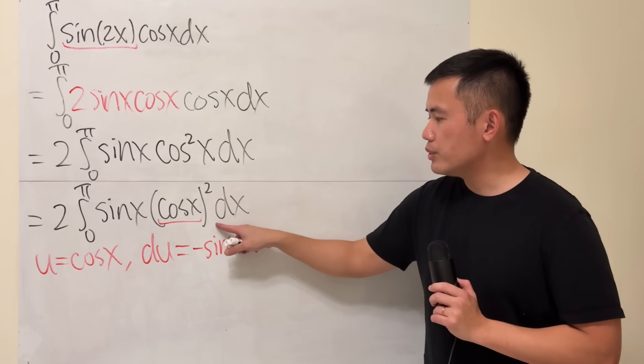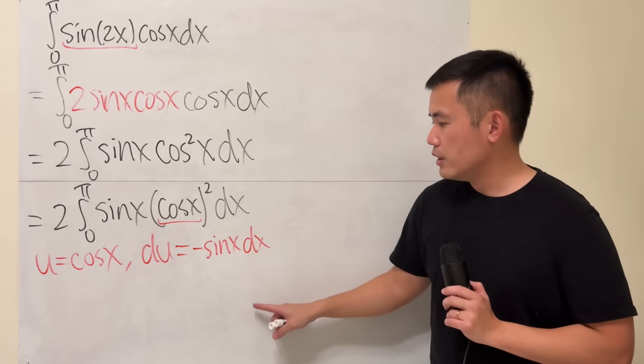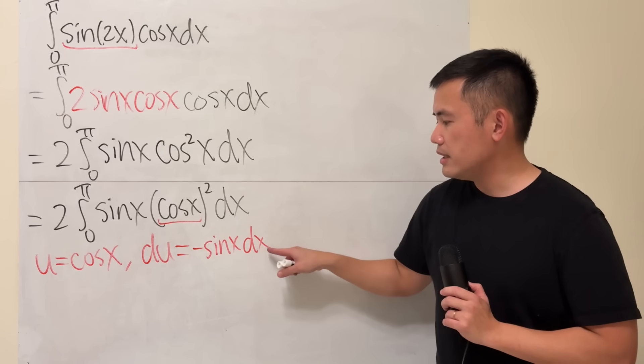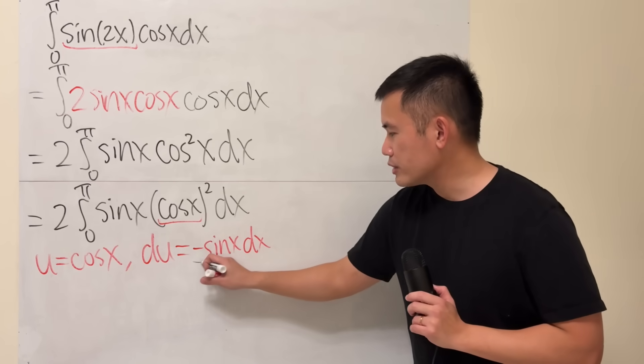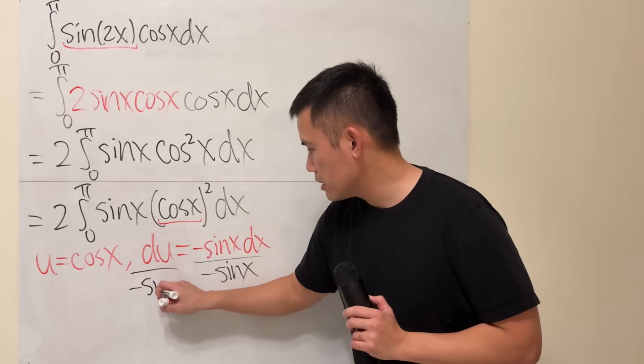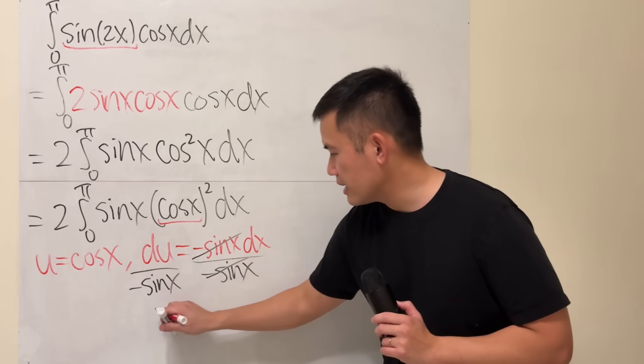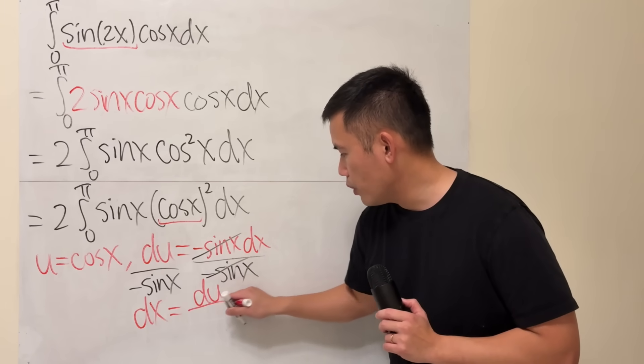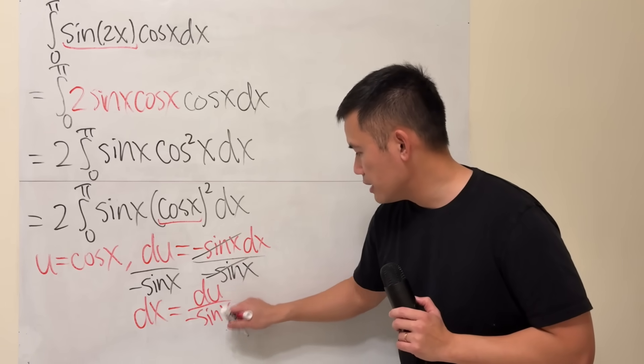What we are going to do is we also need to get the dx by itself. So if you look at this right here, this is negative sine x times dx. I'm going to divide both sides by negative sine x, like this. So that this and that cancel, and I can get dx equal to du over negative sine x.